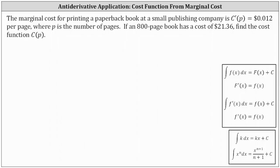The marginal cost for printing a paperback book at a small publishing company is C'(P) = $0.012 per page, where P is the number of pages. If an 800-page book has a cost of $21.36, find the cost function C(P).